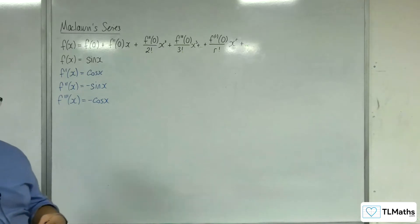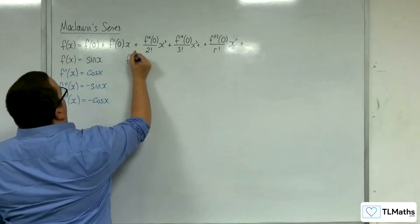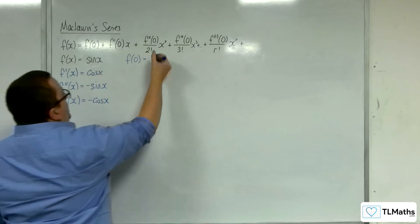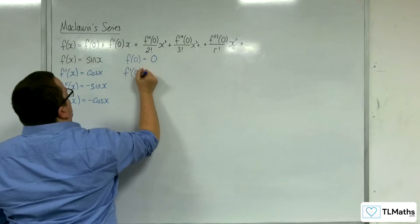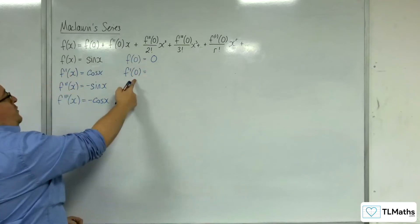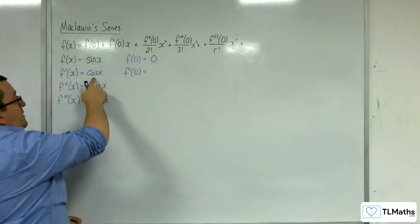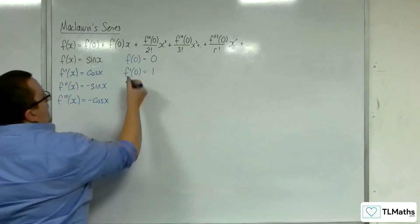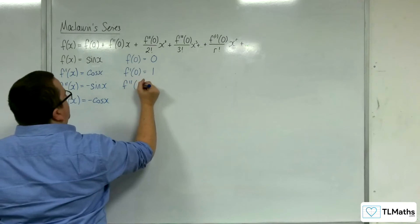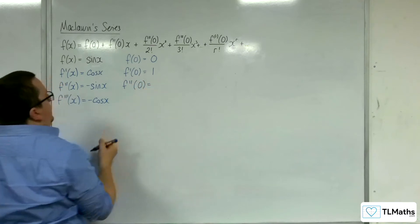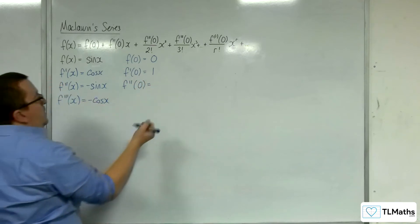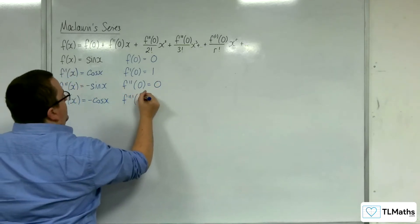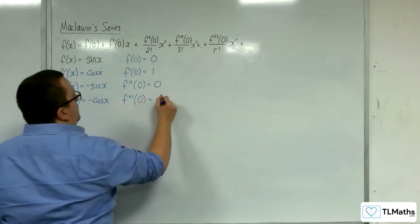Now we need to evaluate each of these when x is zero. So f of zero is sine of zero, which is zero. Now, when you evaluate the first derivative at zero, cosine of zero is one. And then the second derivative evaluated at zero will be minus sine of zero, which is still zero. And the third derivative evaluated at zero will be minus one.